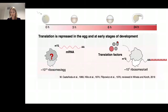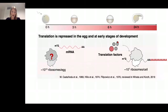With cryo-EM data, we could see densities for all the factors we previously identified with mass spec, shielding all functionally important sites of this one-hour egg ribosome. On the left is a movie Laura built for the one-hour zebrafish egg ribosome. Given that all these proteins shield all functionally important sites, we termed these ribosomes 'dormant egg ribosomes,' because they cannot be translated into active ribosomes.